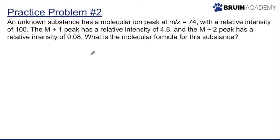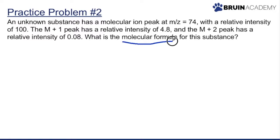For our next problem: an unknown substance has a molecular ion peak at m/z equal to 74 with a relative intensity of 100. The M+1 peak has a relative intensity of 4.8, and the M+2 peak has a relative intensity of 0.08. What is the molecular formula?